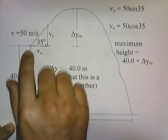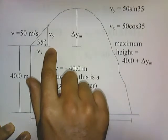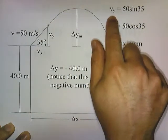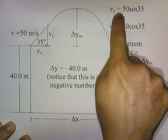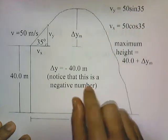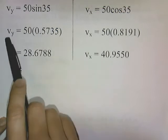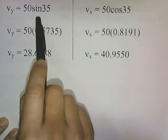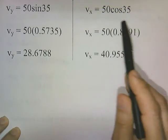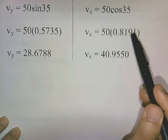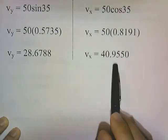We can get started by finding the initial velocity components. The initial horizontal velocity is Vx equals 50 cosine 35, and the initial vertical velocity is Vy equals 50 sine 35. So Vy equals 50 times 0.5735, which gives 28.6788 meters per second. And for horizontal velocity, 50 cosine 35: cosine of 35 is 0.8191, and 50 times that gives 40.9550 meters per second. So we have both the initial vertical and horizontal velocities.